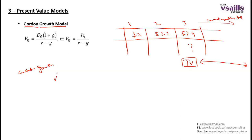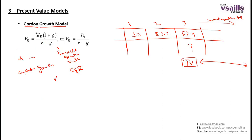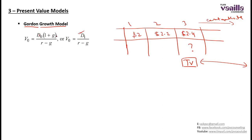Gordon Growth Model is: current year dividend multiplied by (1 + G), divided by (R minus G). R is your required rate of return and G is your sustainable growth rate (SGR). What you are doing is taking the current year dividend, multiplying by (1 + G) to get next year's dividend D1, then dividing by (R minus G). So you can either use D0 × (1+G) / (R−G) or equivalently D1 / (R−G), since D0 × (1+G) equals D1.